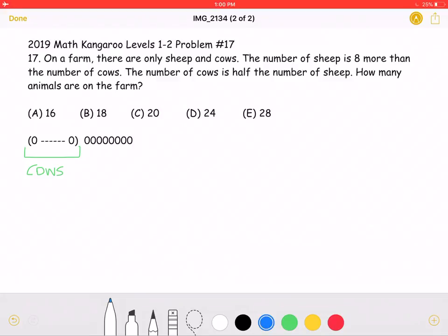The problem states that the number of sheep is 8 more than the number of cows. So I have drawn 8 circles. So this total number is the number of sheep, because the number of sheep is 8 more than the number of cows.